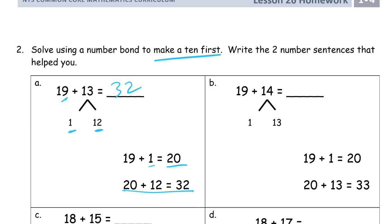And for this one here, same thing. 19, I need one more to get it to the next 10, which is 20. That's how I got this right here. And then I'm going to add the 13 to the 20 to get 33.